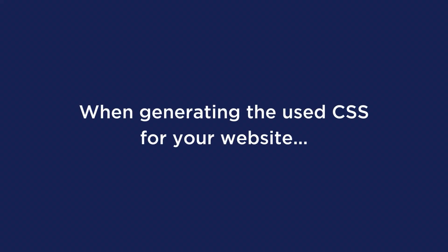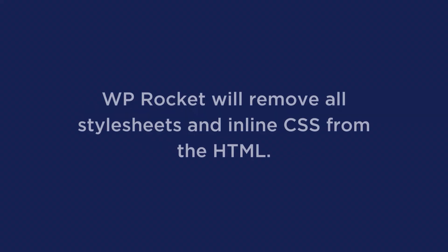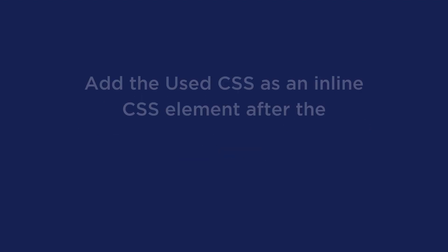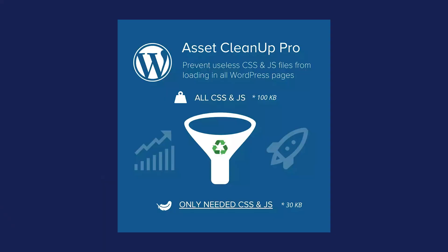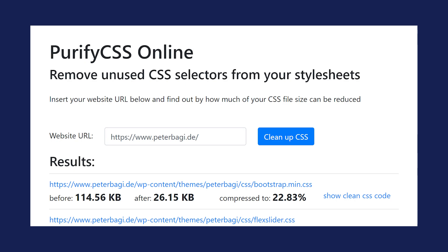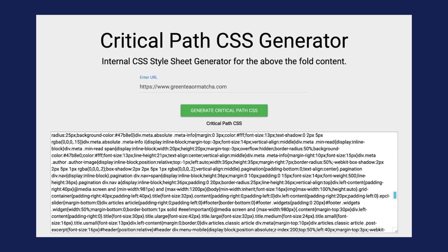When generating the used CSS, WP Rocket will remove all style sheets and inline CSS from the HTML, and then add the used CSS as an inline CSS element after the title. There are also a few other plugins and tools you could use, such as Asset Cleanup, Purify CSS (which will require some technical knowledge), and Critical Path CSS Generator, which requires you to follow Google's instructions.